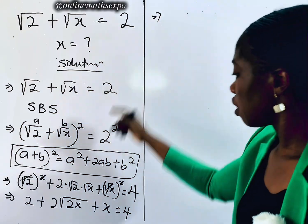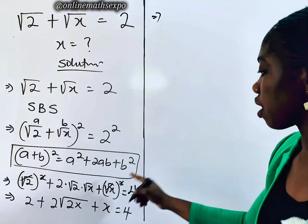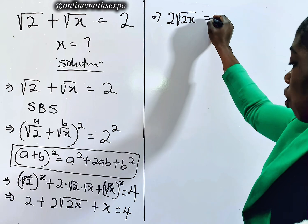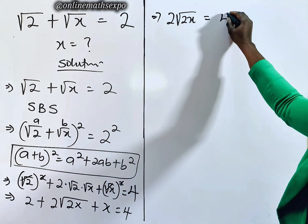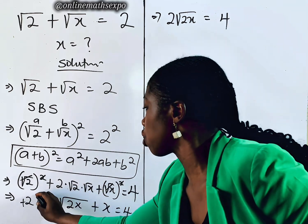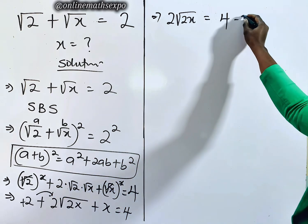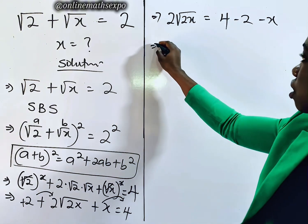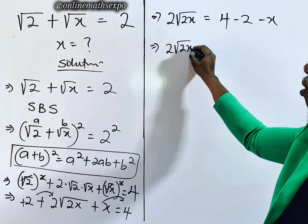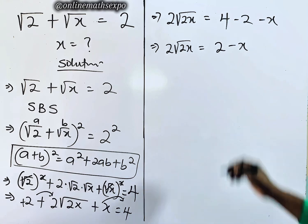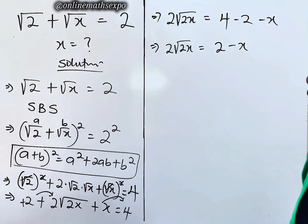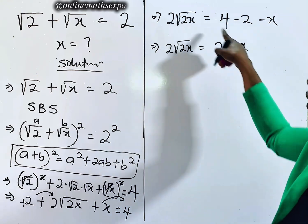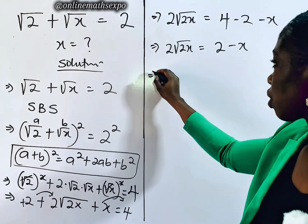Now let's take terms to the right side. We have 2√(2x) equal to 4 minus 2 minus x, which gives us 2√(2x) = 2 − x. To remove the radical sign, we're going to square both sides again.